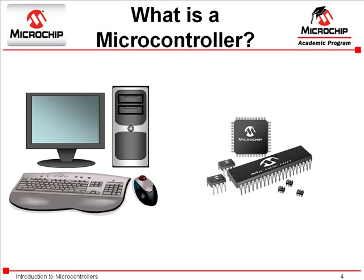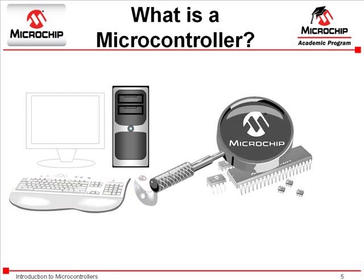Now, a PC typically performs a number of tasks or runs a variety of programs simultaneously. For example, you could listen to music while typing in a word processor or even have a web browser open all at the same time. A microcontroller, on the other hand, is typically dedicated to a single task. However, if we take a look at the basic components that make up both a PC and a microcontroller, we'll see many similarities.